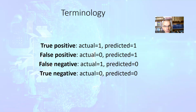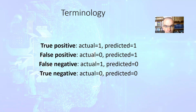Let us introduce some terminology. We will say that a decision is true positive if the actual label was 1 and the predicted label is also 1. We will call a decision false positive when we predict 1 although the actual label was 0. False negative: actual equals 1 while the predicted is 0. And true negative: actual is 0 and predicted is also 0.